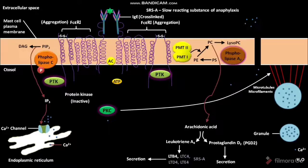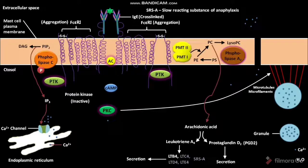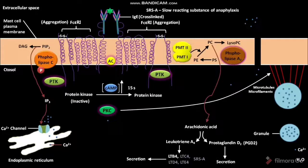The cross-linkage between FC-Epsilon-RI receptors also activates membrane adenylyl cyclase (AC). Cytosolic ATP then binds to the active adenylyl cyclase, which converts the bound ATP to cAMP. As a result, the concentration of cAMP in the cytosol increases transiently within 15 seconds. In the presence of increased cAMP, the cytosolic inactive protein kinase is converted to an active conformation, using up the cAMP. Consequently, the cAMP concentration decreases, which is required for degranulation to proceed.